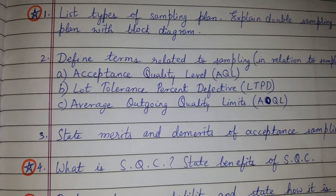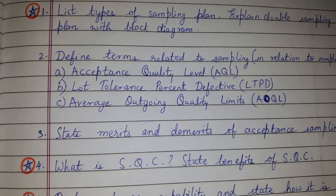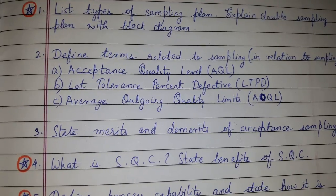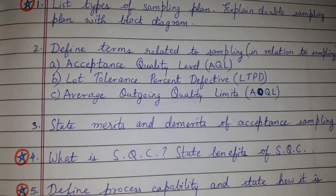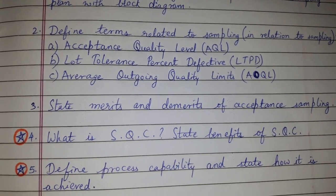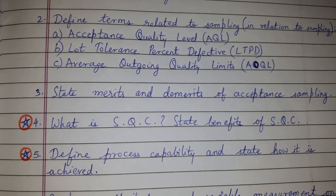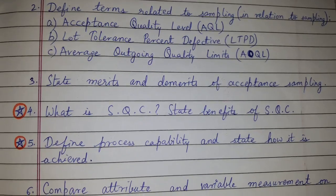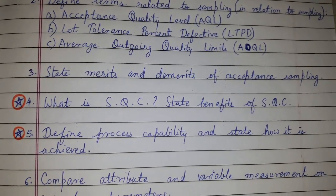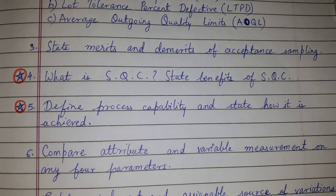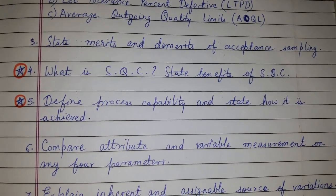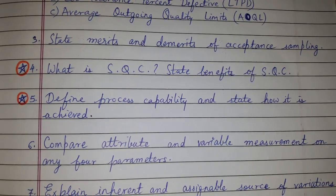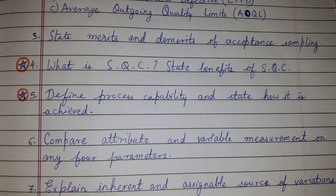Question number one: list types of sampling plan and explain double sampling plan with block diagram. Question number four: what is SQC, state benefit of SQC? Define process capability and state how it is achieved.